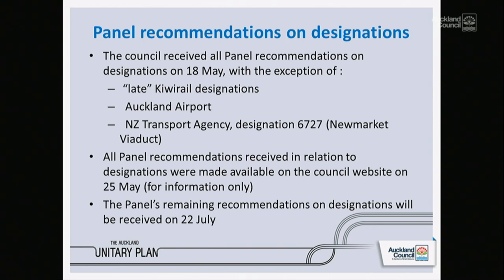The panel's recommendations were received on the 18th of May. We're not expecting any other recommendations from the panel until the 22nd of July, which is where the bulk of the recommendations will come. There were three designations where the panel is still doing further work: a late KiwiRail designation the panel accepted through the process; Auckland Airport, because of its relationship with the zoning and other provisions in the plan; and a New Zealand Transport Agency designation at Newmarket Viaduct relating to signage. That one is still to be received.